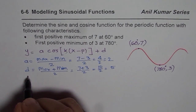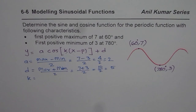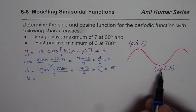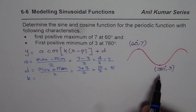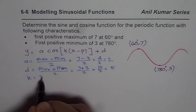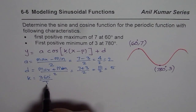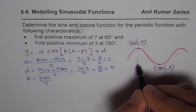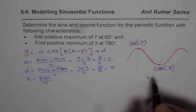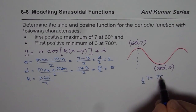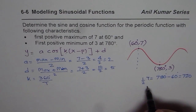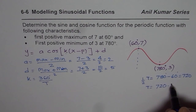Now k relates to the time period. Those who would like to work in radians can translate degrees, but I will do it in degrees. To find k, we first find the time period. Since we are given maximum and minimum, half the time period is the difference between them: 780° − 60° = 720°. So the full time period is 720 × 2 = 1440 degrees.